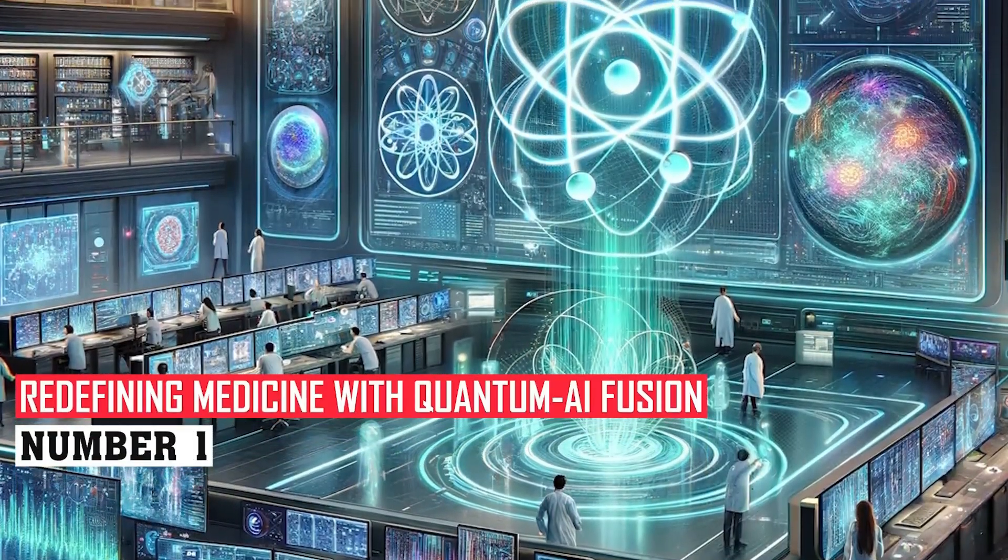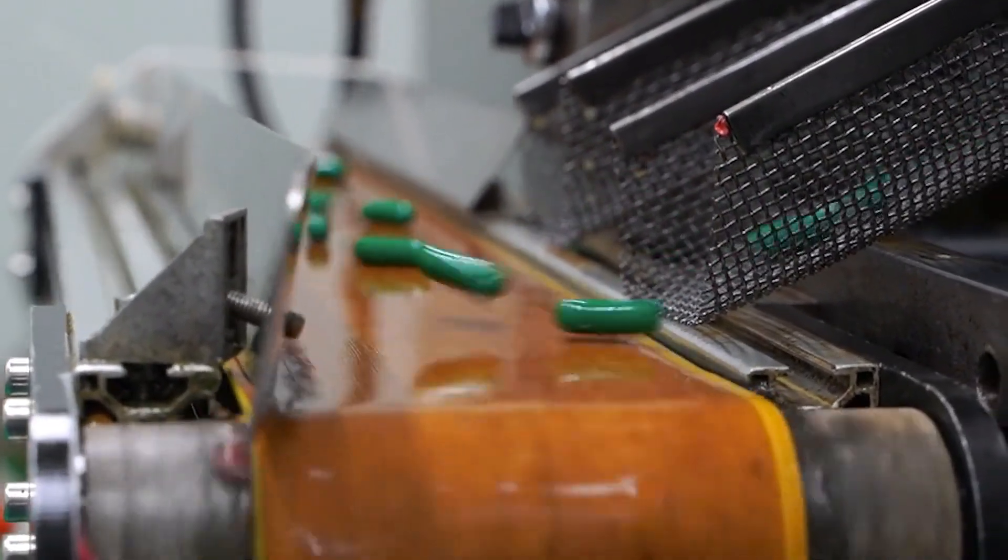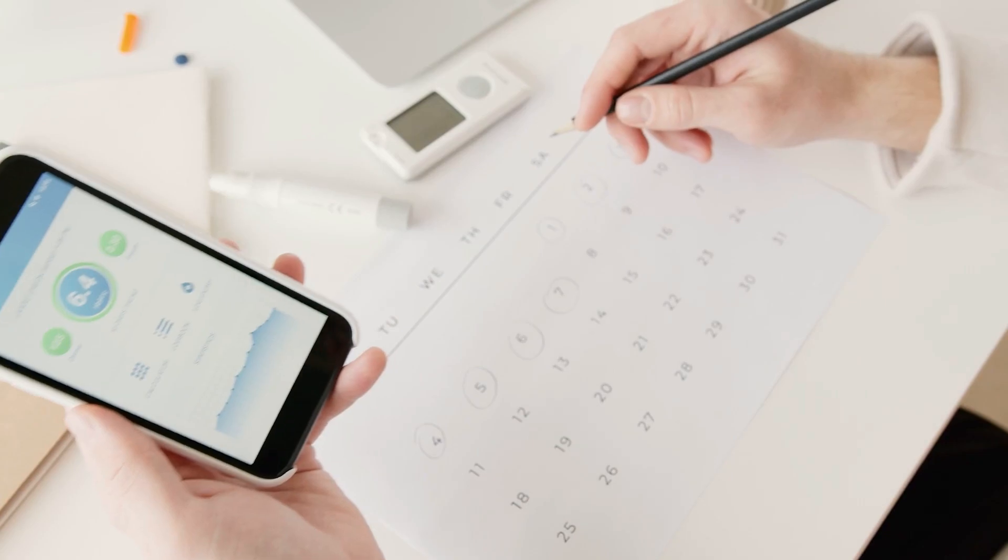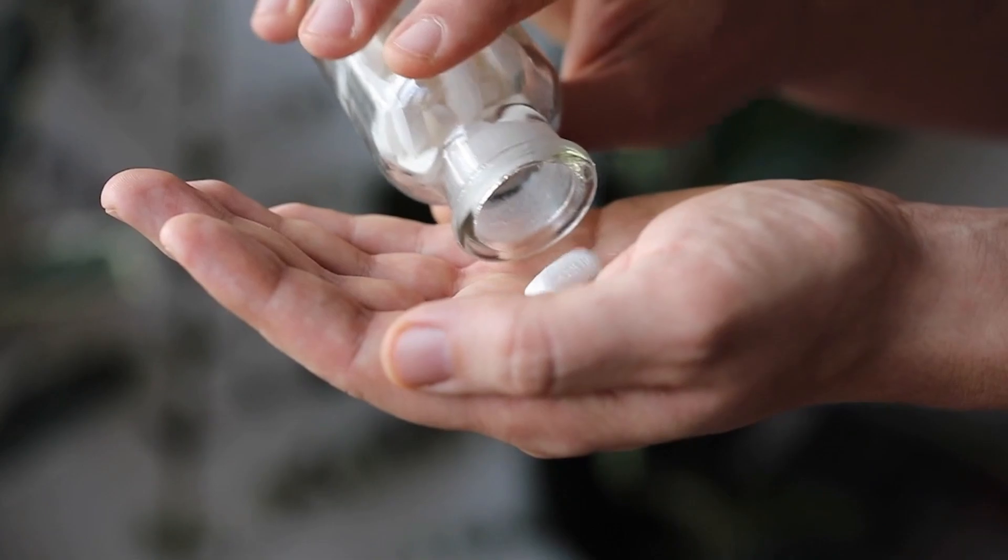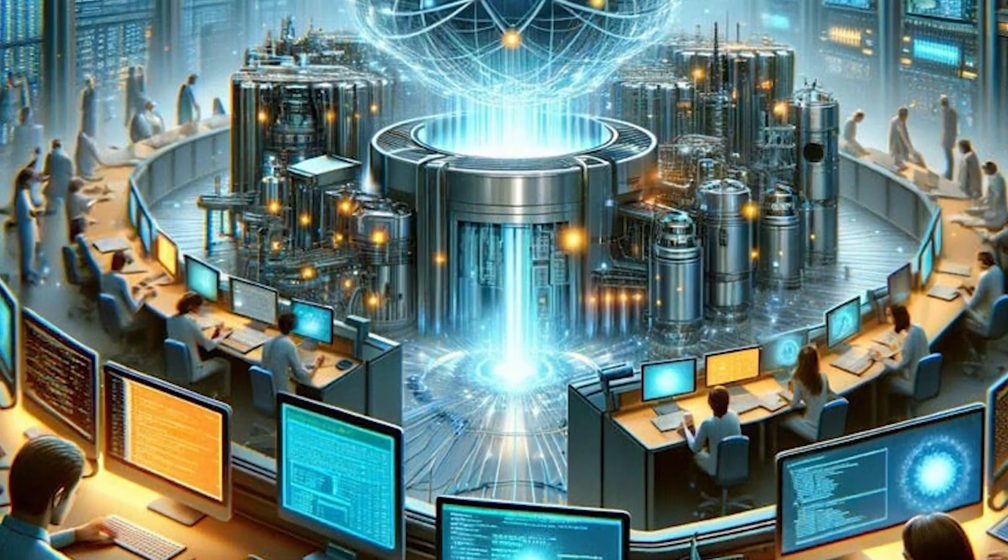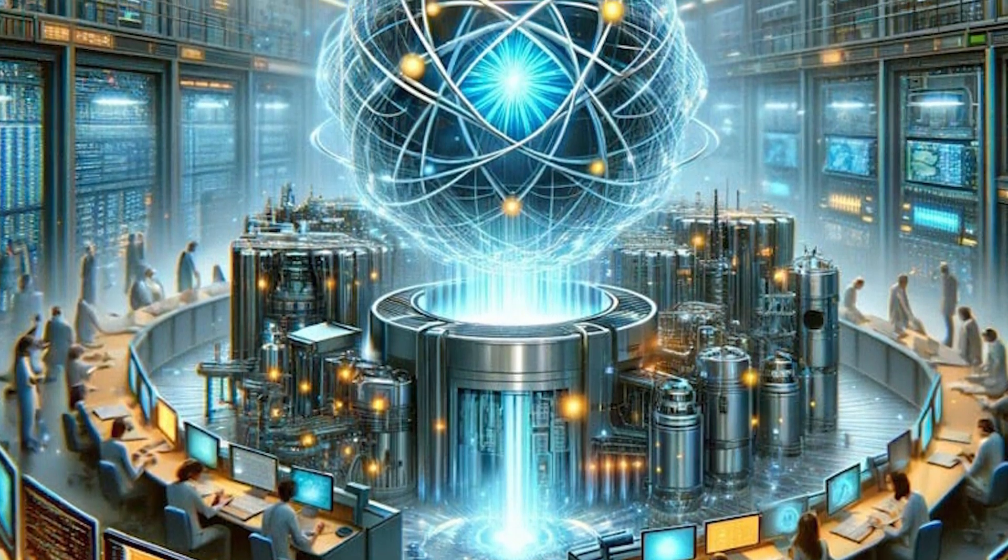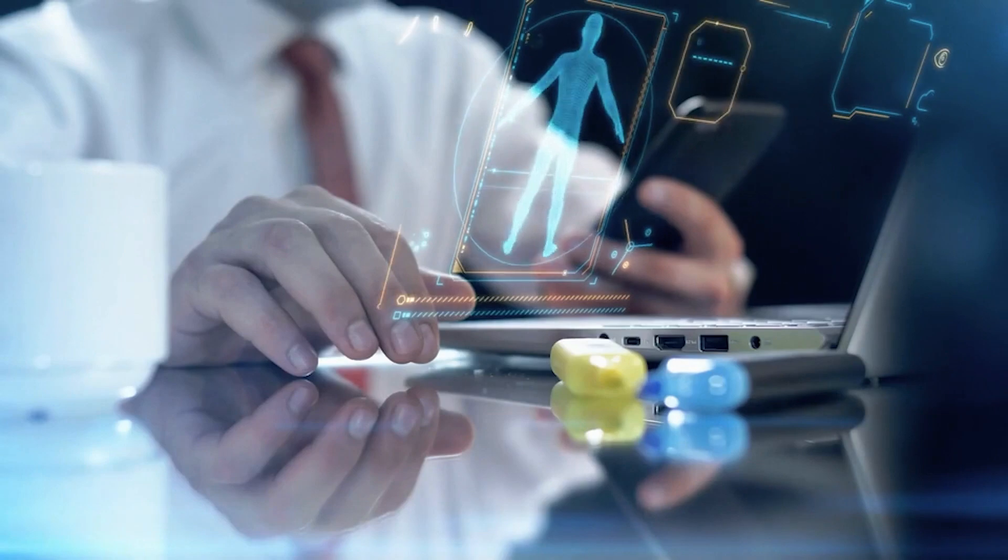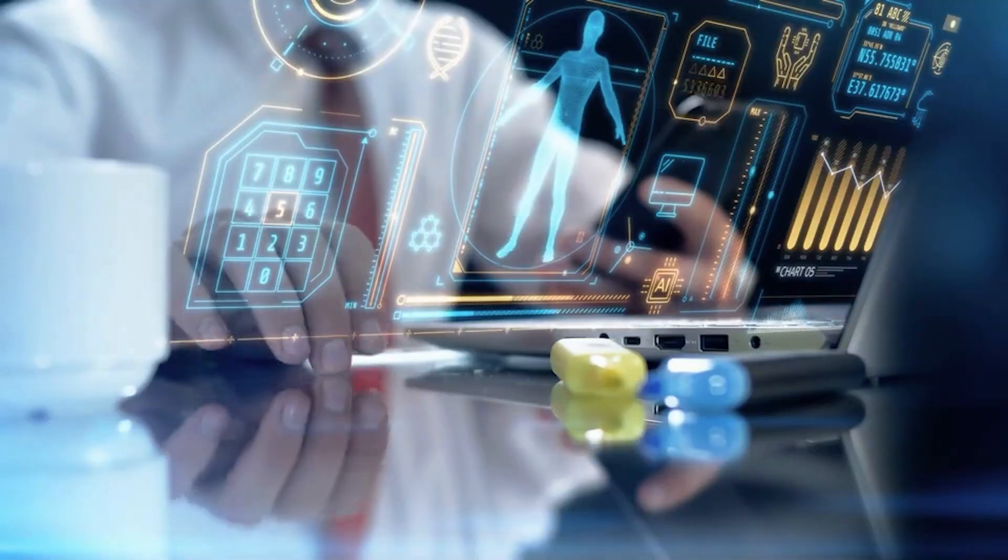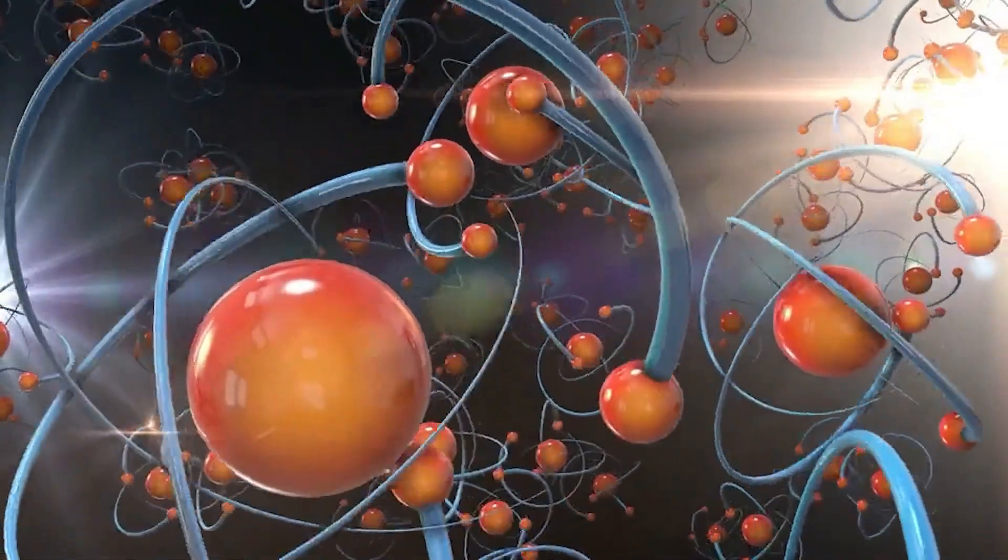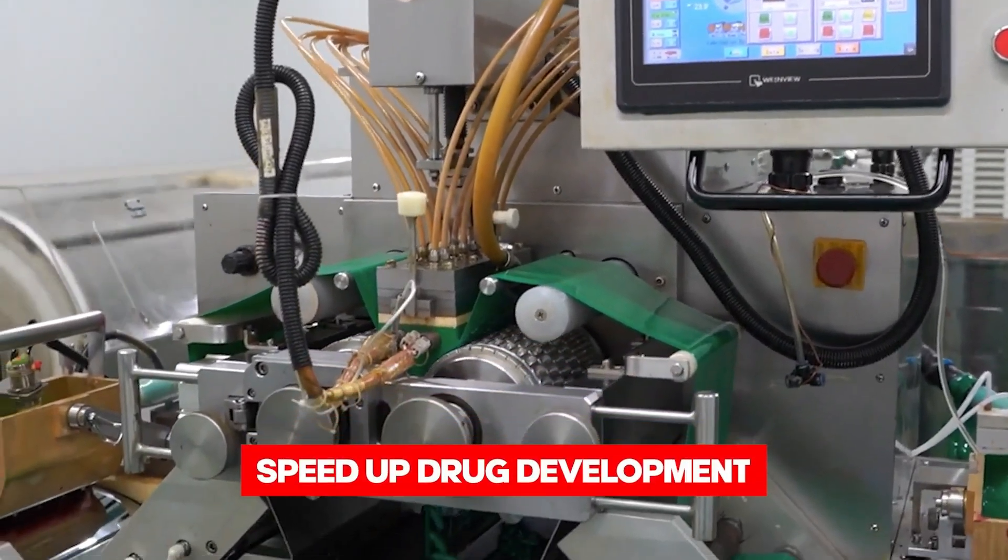Number 1: Redefining medicine with quantum AI fusion. Imagine a day when medications are manufactured with such accuracy that they can adjust to each person's unique genetic code, providing individualized care with unusual effectiveness and no side effects. What if I told you that the revolutionary combination of artificial intelligence and quantum computing had made this future possible? Combining AI's ability to analyze large data sets and anticipate molecular behavior with quantum computing's ability to imitate molecular structures and interactions at a quantum level promises to speed up drug development, improve drug candidates, and customize therapies.